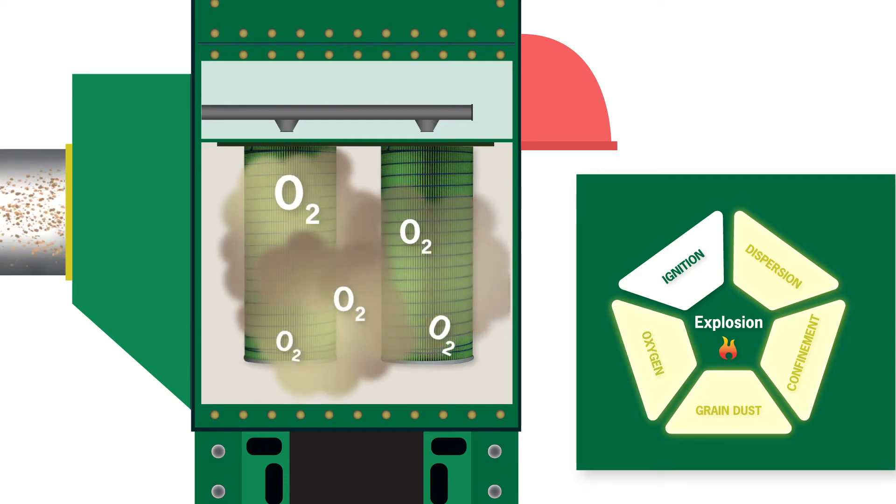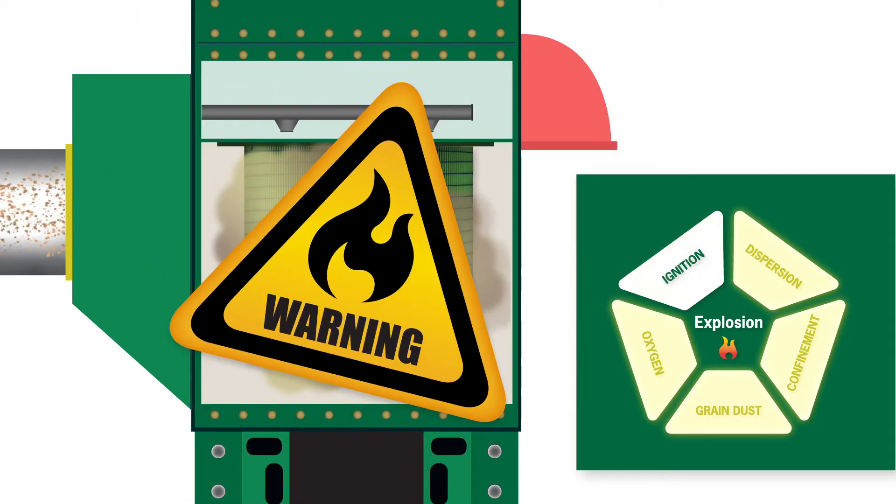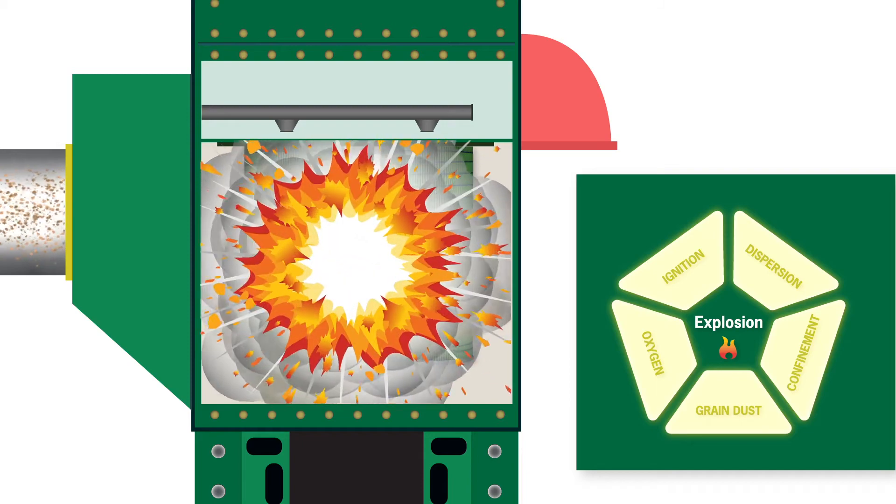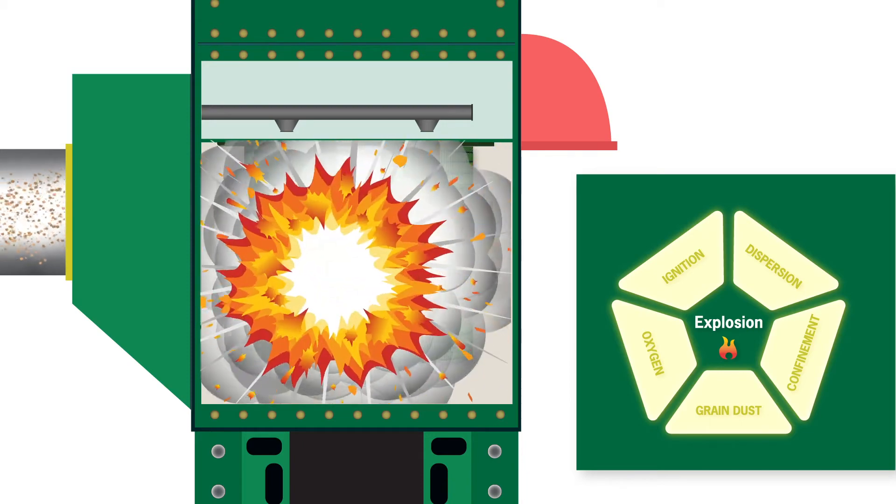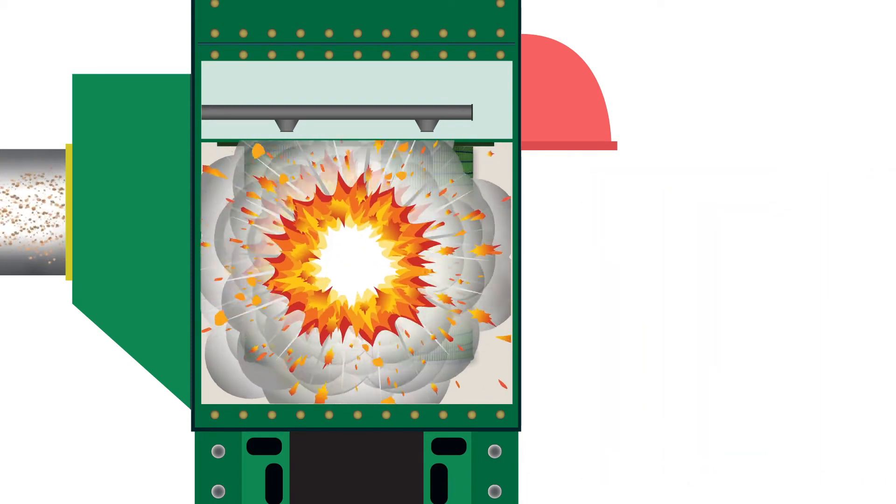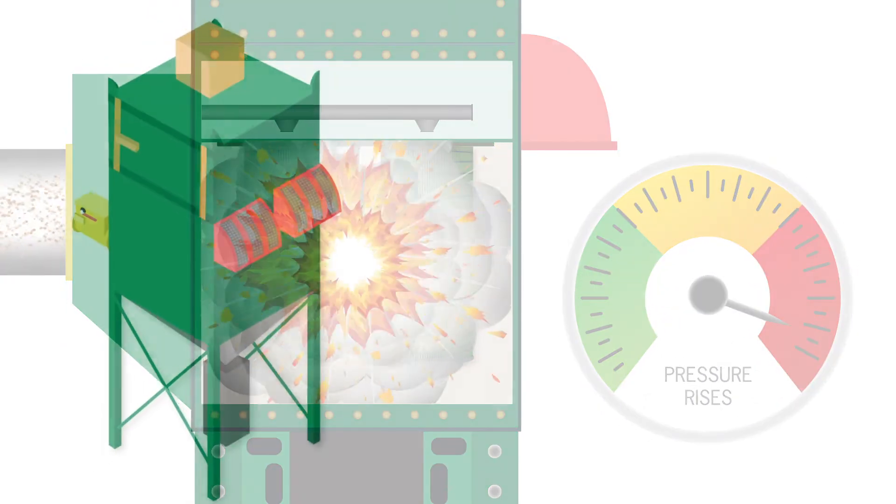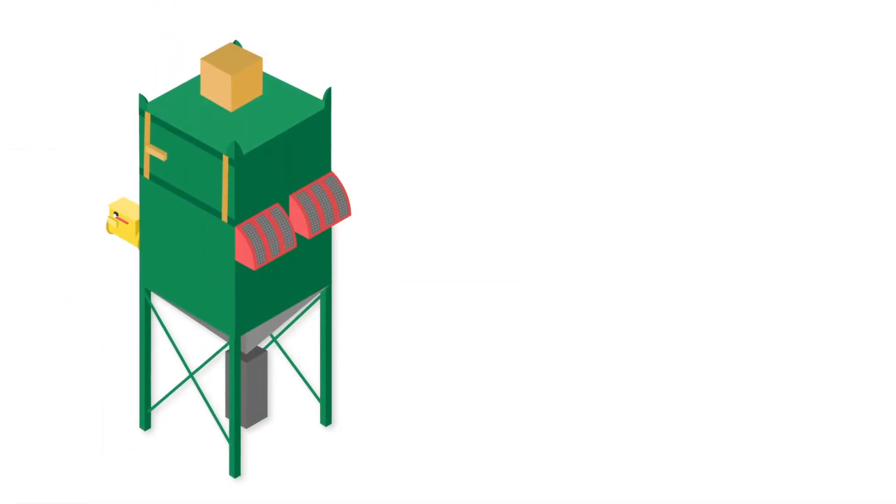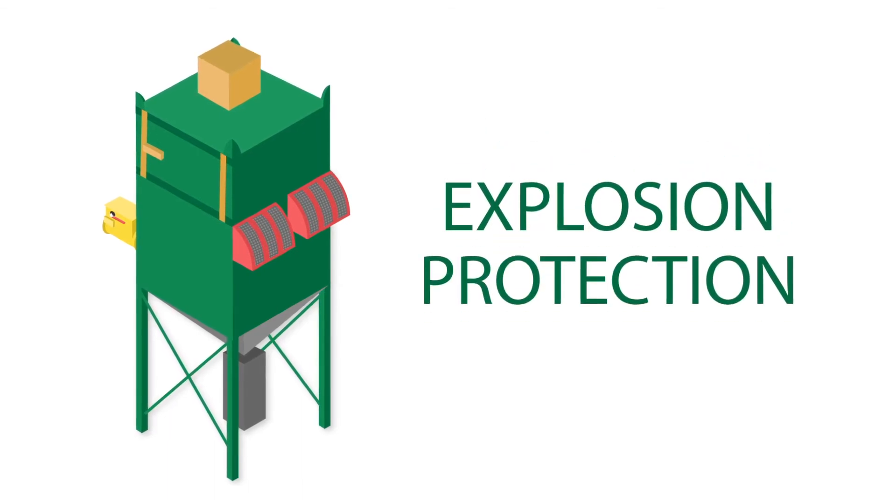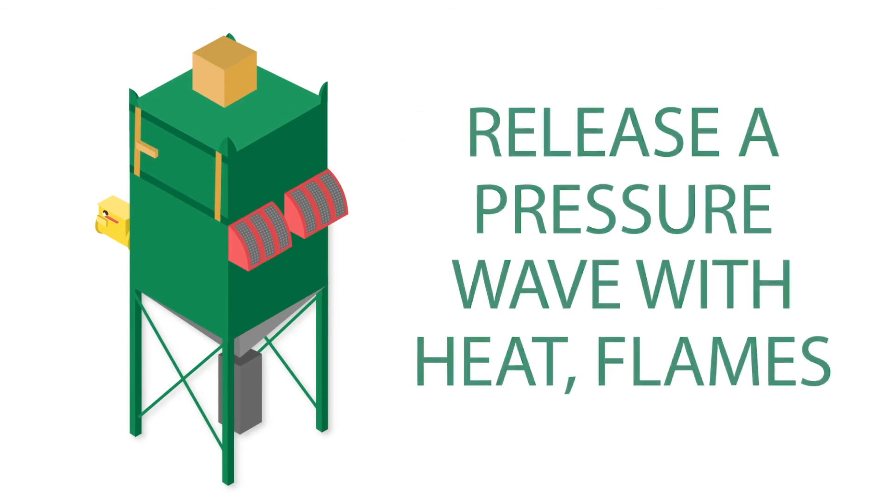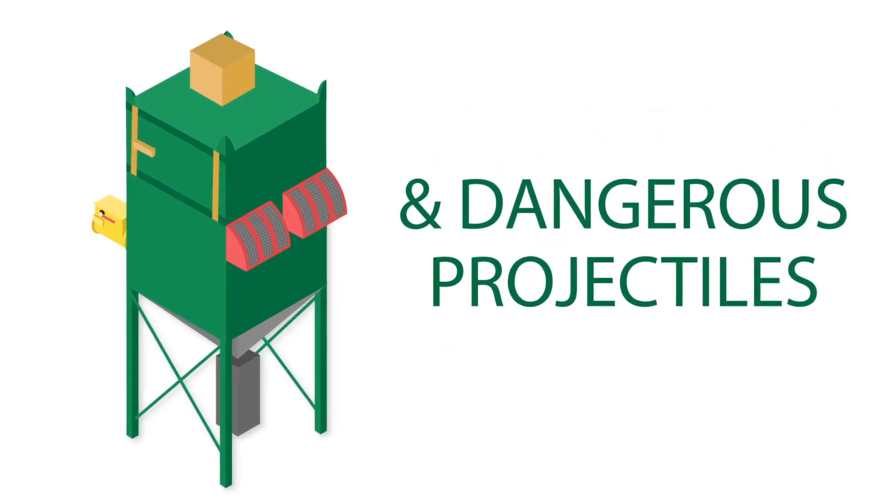At this point, all that's needed for an explosion to occur is an ignition source, which can be anything from a hot bearing or overheated motor to a spark from a misaligned conveyor belt. Once the dust ignites, the pressure inside the collector instantly rises. And unless your dust collector has the proper explosion protection, the housing can fragment and release a pressure wave with heat, flames, and dangerous projectiles into work areas.